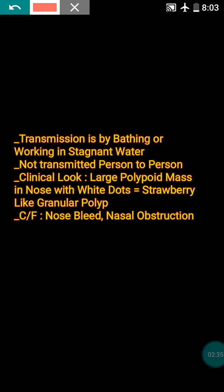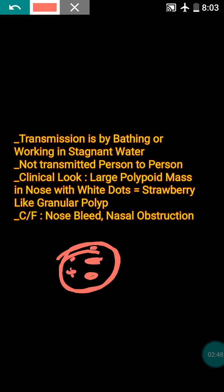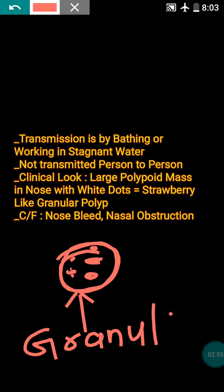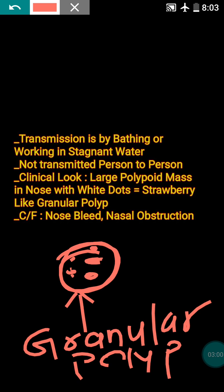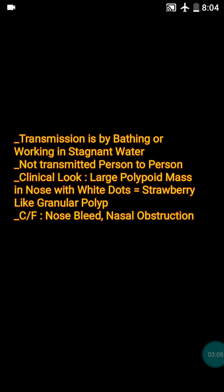Clinically, it presents as an obstructive nasal lesion. There will be a large polypoidal mass in the nose, and within this mass there can be white dots. It appears as a granular polyp, and from the exterior it looks like a strawberry — a strawberry-like granular polyp.